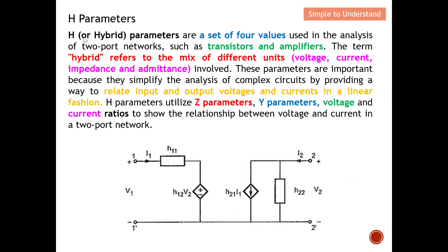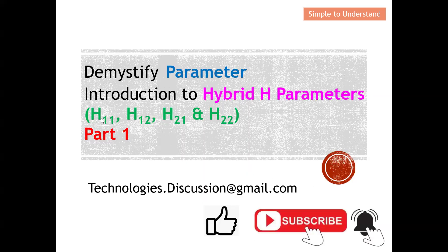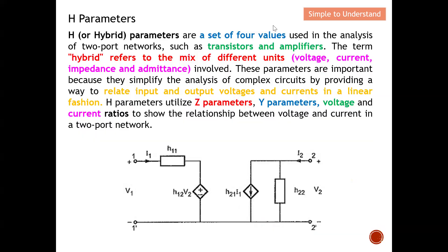Let's quickly understand what H parameters are. H, also known as hybrid parameters, are a set of four values used in the analysis of two-port networks such as transistors and amplifiers. The term 'hybrid' refers to the mix of different units — for example, voltage, current, impedance, and admittance — so we use the word hybrid to describe this mix of different units.